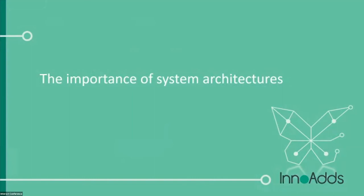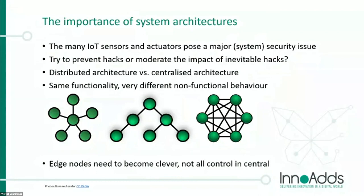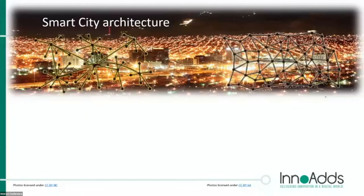System architectures — I promised to come back to this. The millions of IoT sensors and actuators pose a major system security issue. You can try to prevent hacks, but the other way is to moderate the impact of the inevitable attacks. We already heard that it's more or less impossible to avoid being hacked, but you may be able to reduce the impact. This is why we should work on distributed architectures versus centralized architectures — same functionality, but very different non-functional behaviors. End nodes should not be stupid sensors controllable from one central point; there should be minimal intelligence in end nodes to take decisions autonomously.